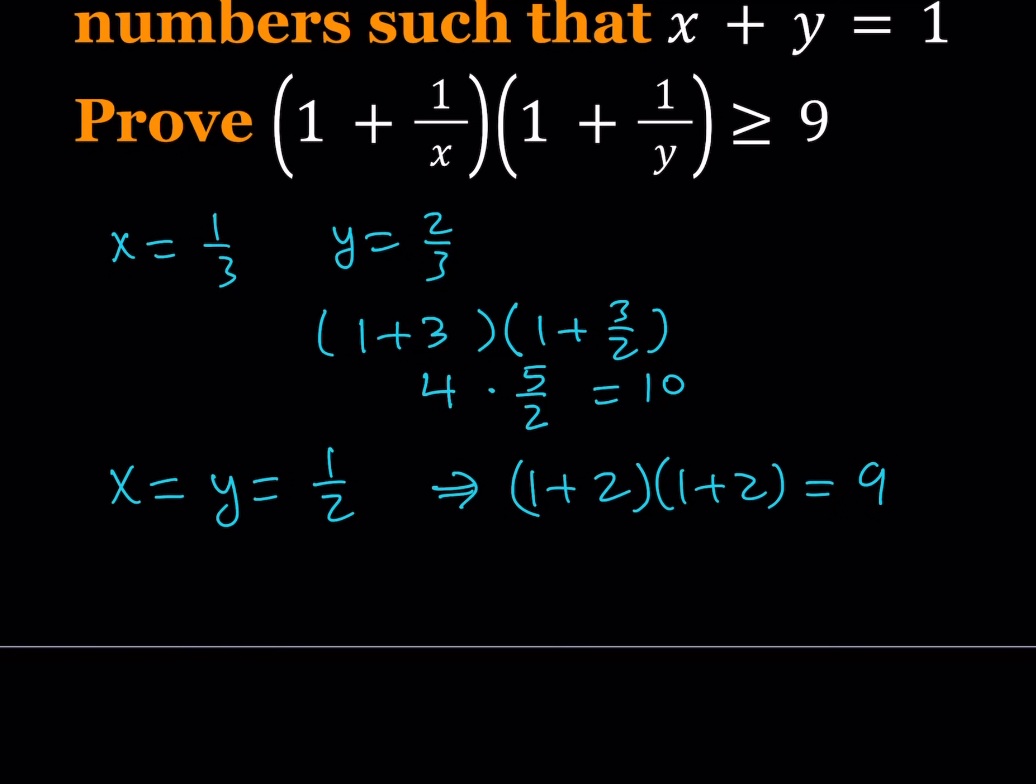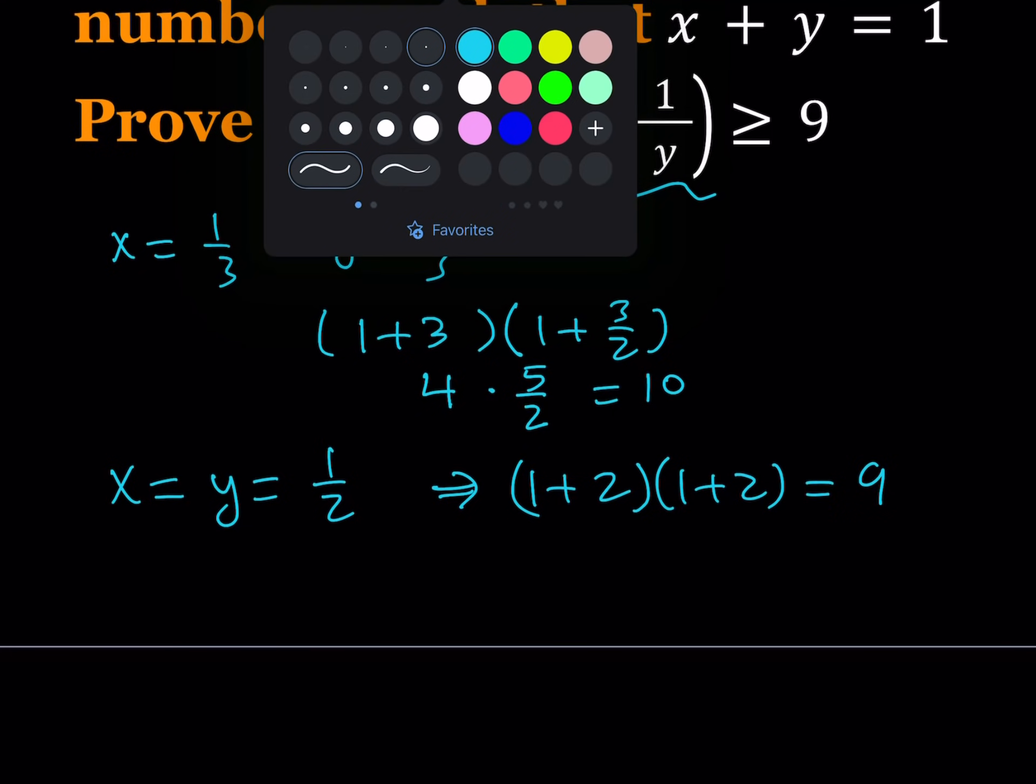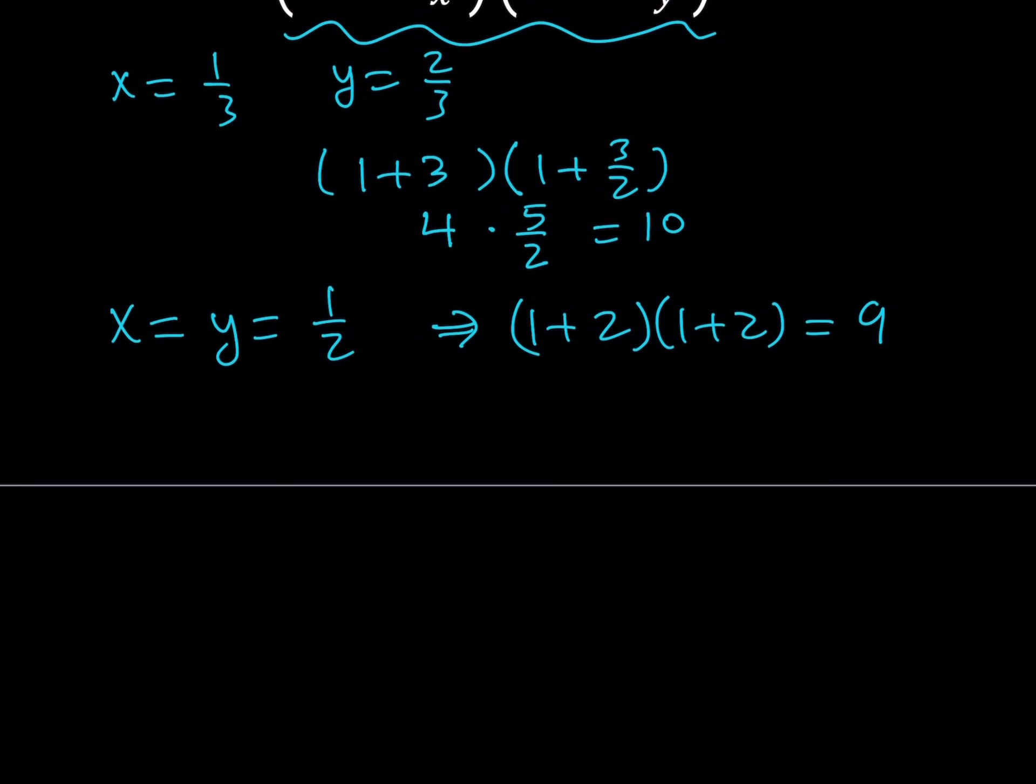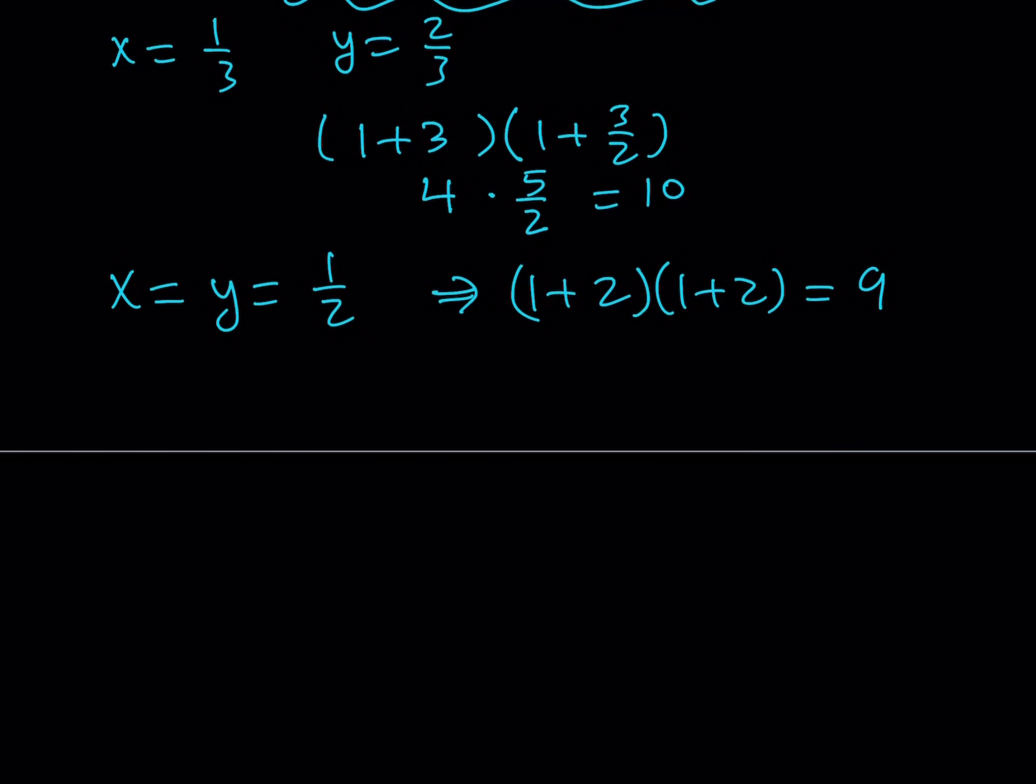So, what am I going to do? Well, I have that x plus y is equal to 1. And I need to prove this. So, why don't I just go ahead and take this product and break it down? Or, should I say, distribute. Let's go ahead and distribute that and see what happens. When I distribute this, I'm going to be getting 1 plus 1 over x plus 1 over y. And then when I multiply 1 over x times 1 over y, I should be getting 1 over xy.